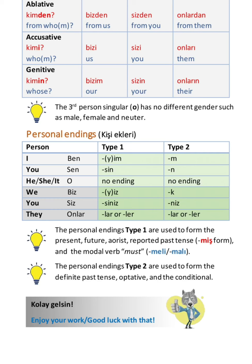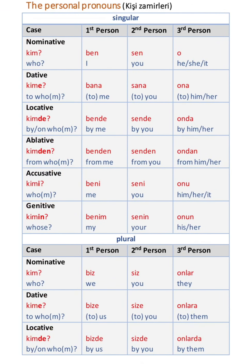Kimi, bizi, sizi, onları. Kimin, bizim, sizin, onların. Kim, ben, sen, o. Kimi, bana, sana, ona. Kimde, bende, sende, onda. Kimden, benden, senden, ondan. Kimi, beni, seni, onu. Kimin, benim, senin, onun.